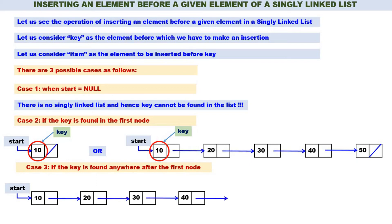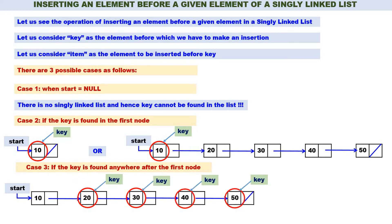Let us consider this linked list with five nodes. Key may be found at 20, 30, 40, or 50, and before that node we have to make an insertion — that means inserting before 20, 30, 40, or 50, whichever is the key. These three cases cover all the logic of inserting: Case 1 — start is null; Case 2 — key found in first node; Case 3 — key found anywhere after the first node.